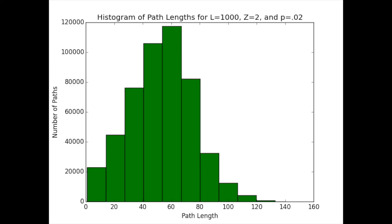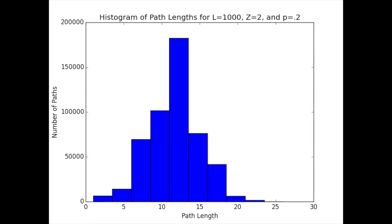Here is the histogram of path lengths for p equals 0.02. Note that the average path length is 51. Here is the histogram of path lengths for p equals 0.2. The path lengths are a lot shorter. Note that the average path length is 11.